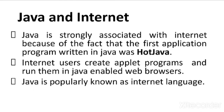Now let us see the relationship between Java and the internet. Java is one of the most popular programming languages used today. The reason it became so popular is that it was the first programming language used across the internet. Java is strongly associated with the internet because the first application program written in Java was called Hot Java, which was a web browser — like Google Chrome or Mozilla Firefox — and it was the first web browser which supported Java language.